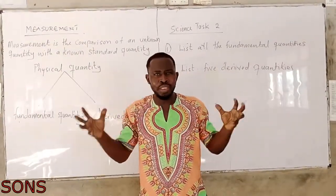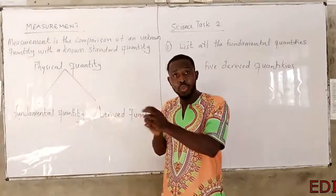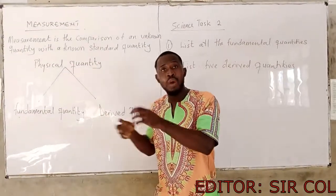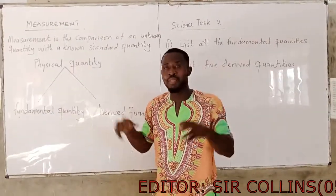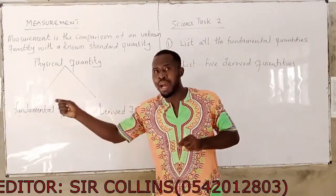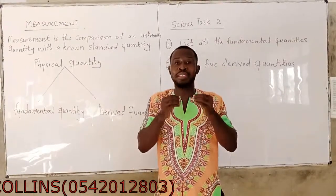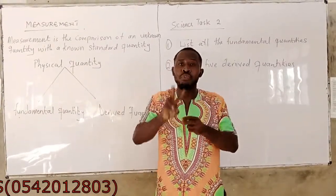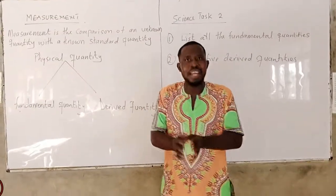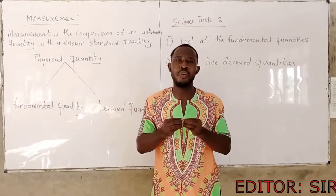Derived quantities are formed from the combination of two or more fundamental quantities. For us to get an area, we need two lengths — length times length equals area. So area is a derived quantity obtained from two fundamental quantities, which is length and another length. This is how derived quantities are formed.